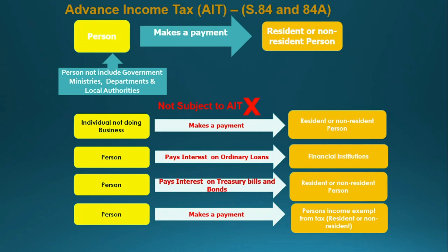Generally, these withholding taxes are imposed when a person making payments to another person. Section 84 and Section 84A have a clear difference when compared to the payments made to resident individuals, which will be taxed under Section 85. If you are a person making withholding tax-subjected payments to a resident or non-resident person, generally this section is applicable.